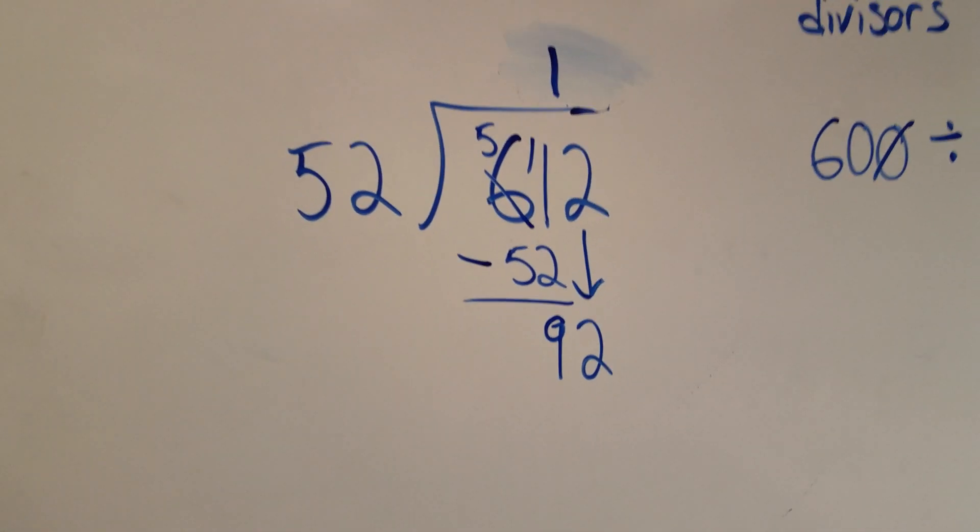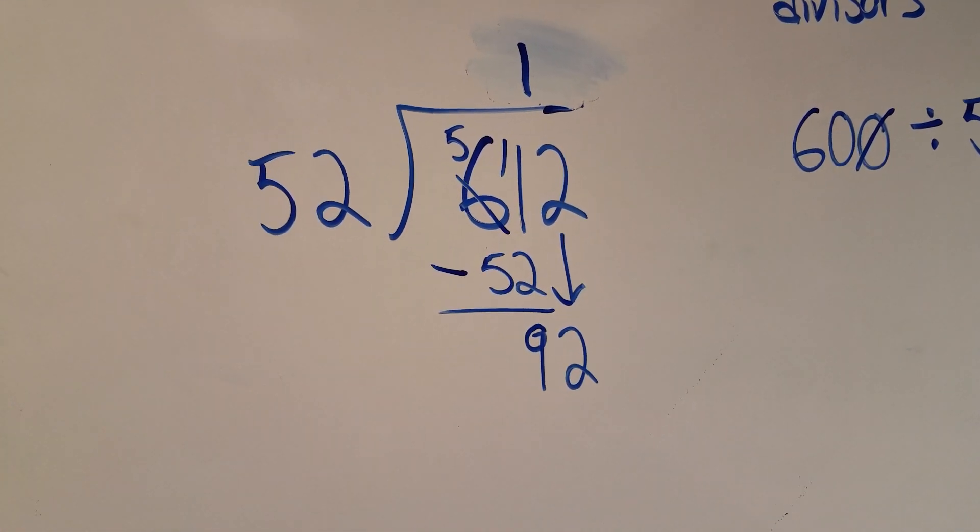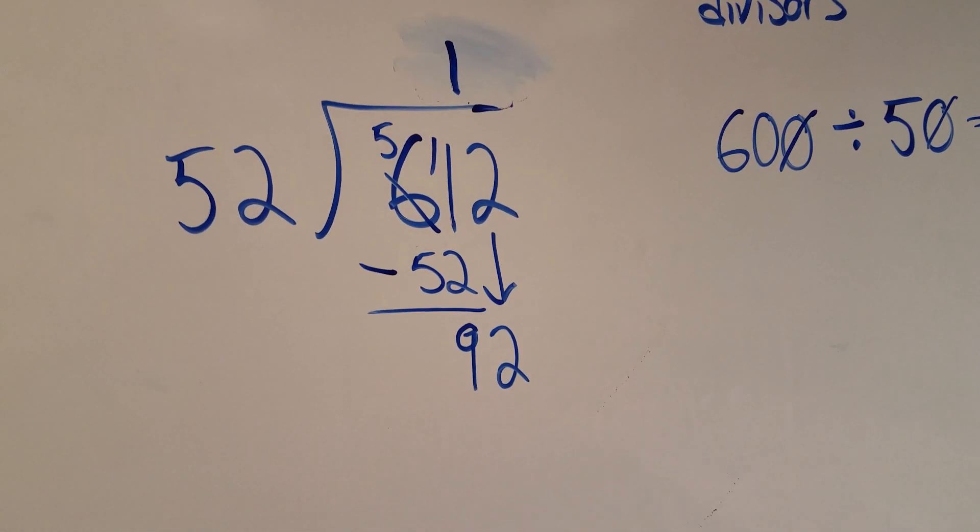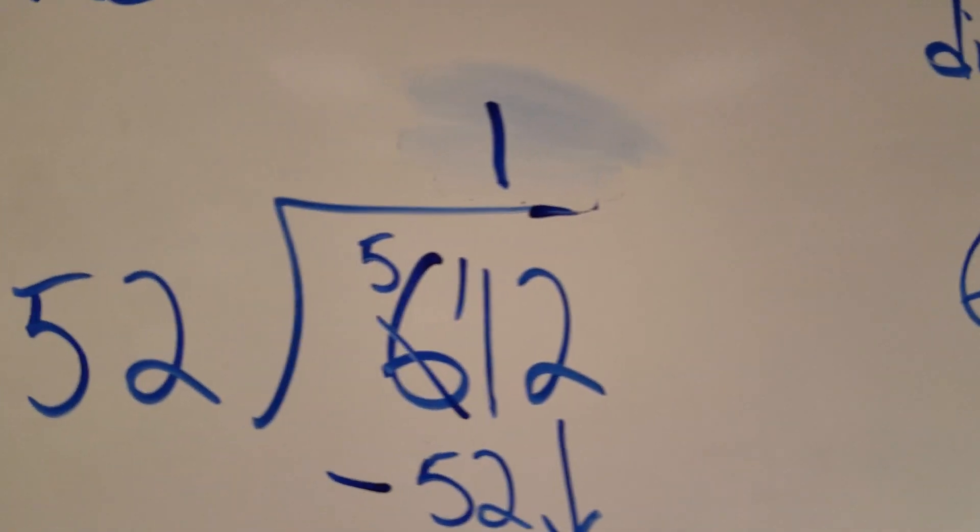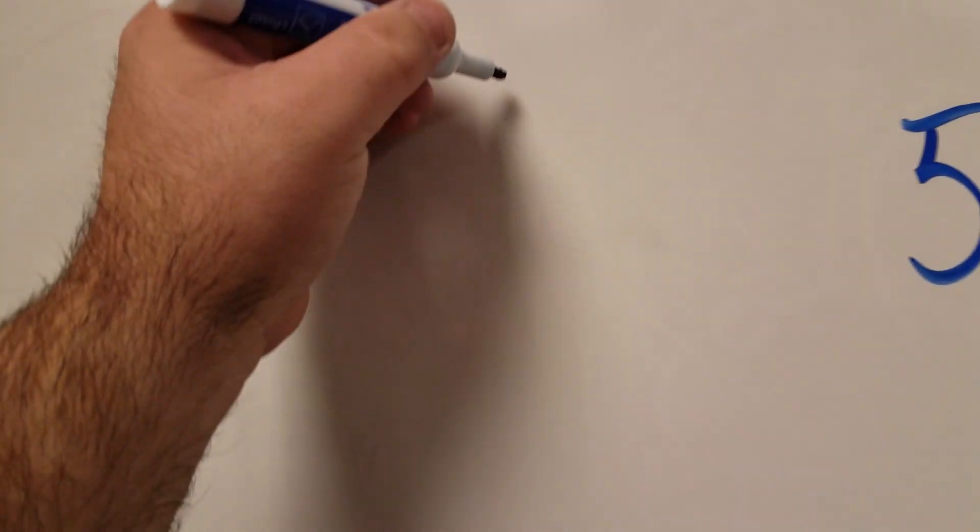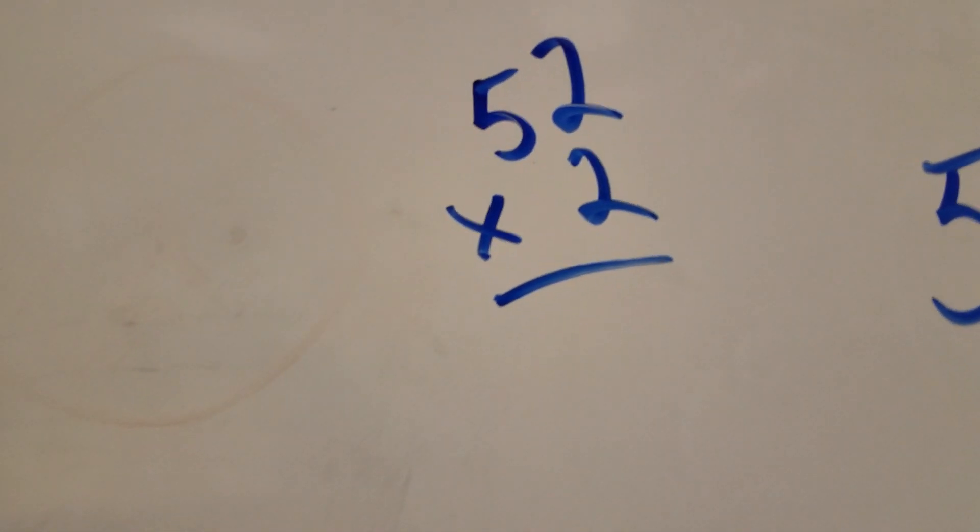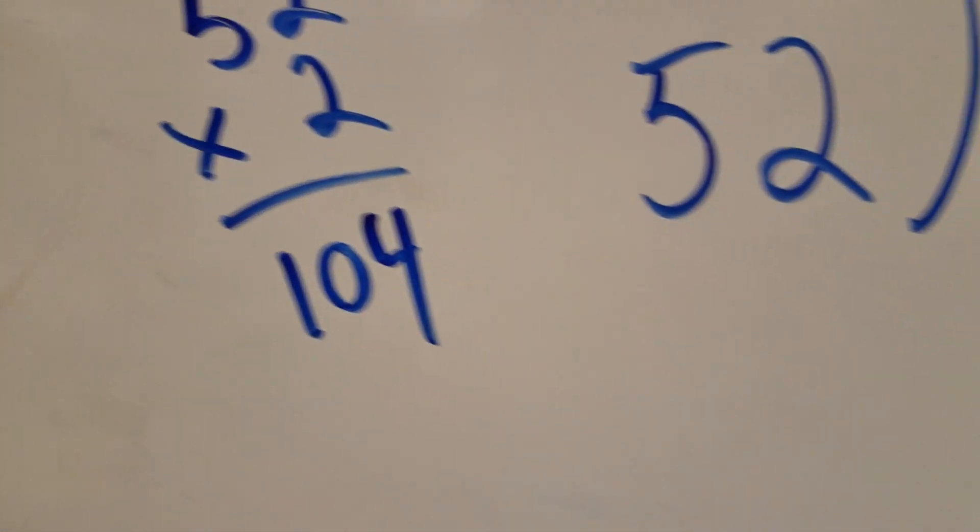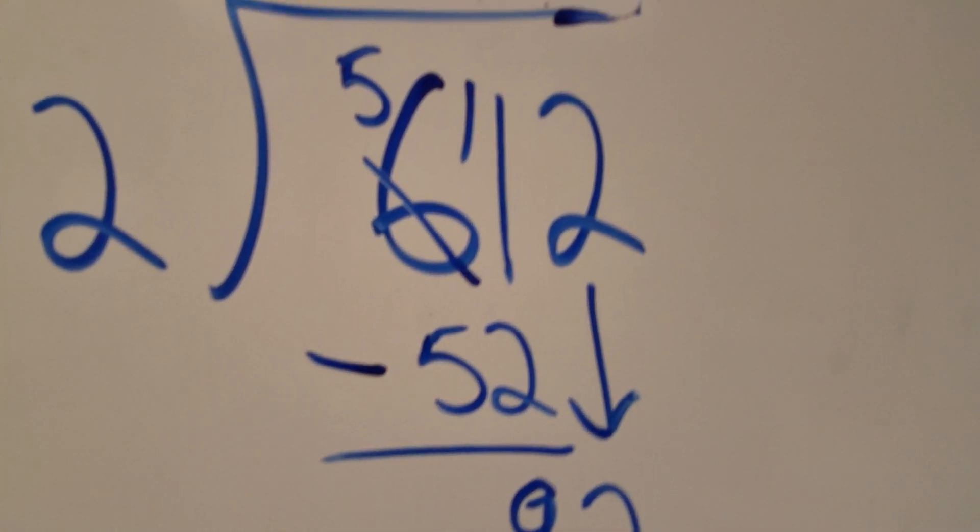All right, so I'm halfway there. Now I don't know my times tables up to 52, so I got to do some guessing. Well, I know that my estimate said 12 and I'm almost there, so I'm going to say, what's 52 times 2? 2 times 2 is 4, 5 times 2 is 10. Well, that's too much. I need 92.